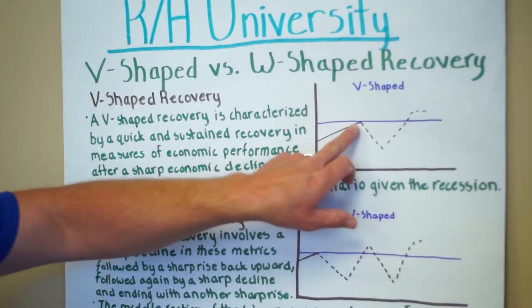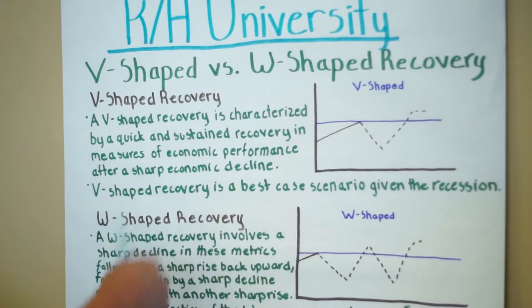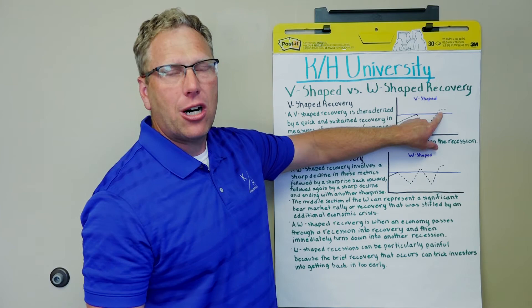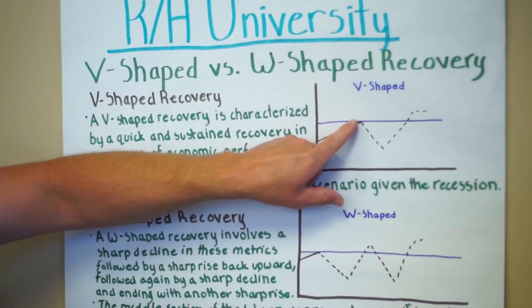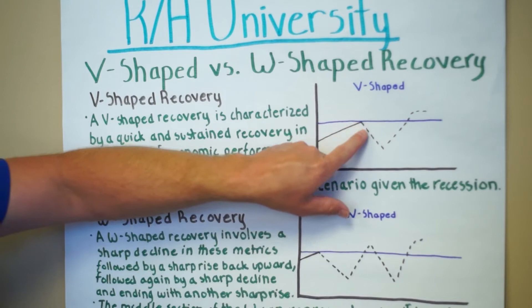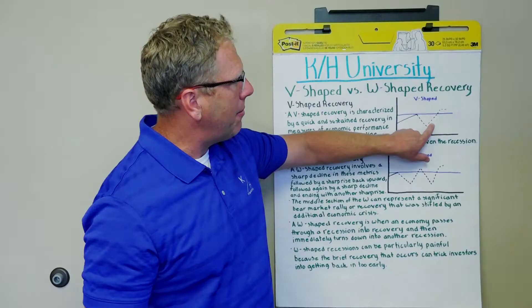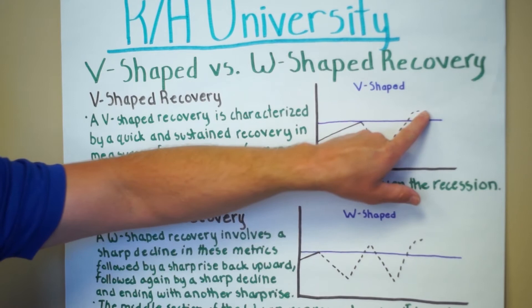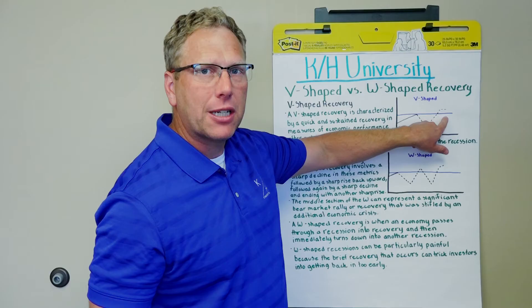In a V-shaped recovery, it's going to look something like this: we have a quick and sustained recovery following a slowing economy or a recession, where the economy fell off of a cliff briefly. Then when the economic activity and the output produced by our economy really starts to take off, it takes off and goes on a tear. That's where you get the V-shaped recovery from.